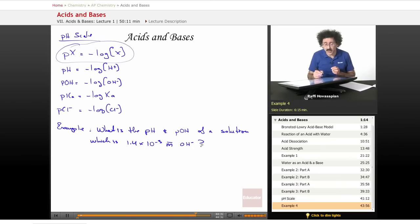They want the pH and they want the pOH. Well, I know the pH is the negative log of the hydrogen ion concentration, pOH is the negative log of the hydroxide ion concentration. Well, they give me the hydroxide ion concentration, so why don't I just deal with that one first?